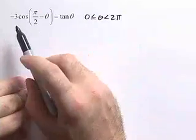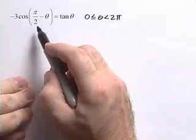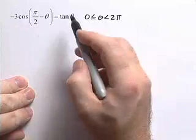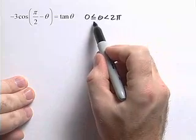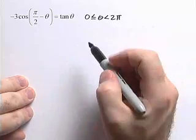Here we're going to solve a trigonometric equation. We'd like to solve the equation negative 3 cosine of pi over 2 minus theta is equal to tangent of theta. We want to solve that on the interval 0 less than or equal to theta less than 2 pi.